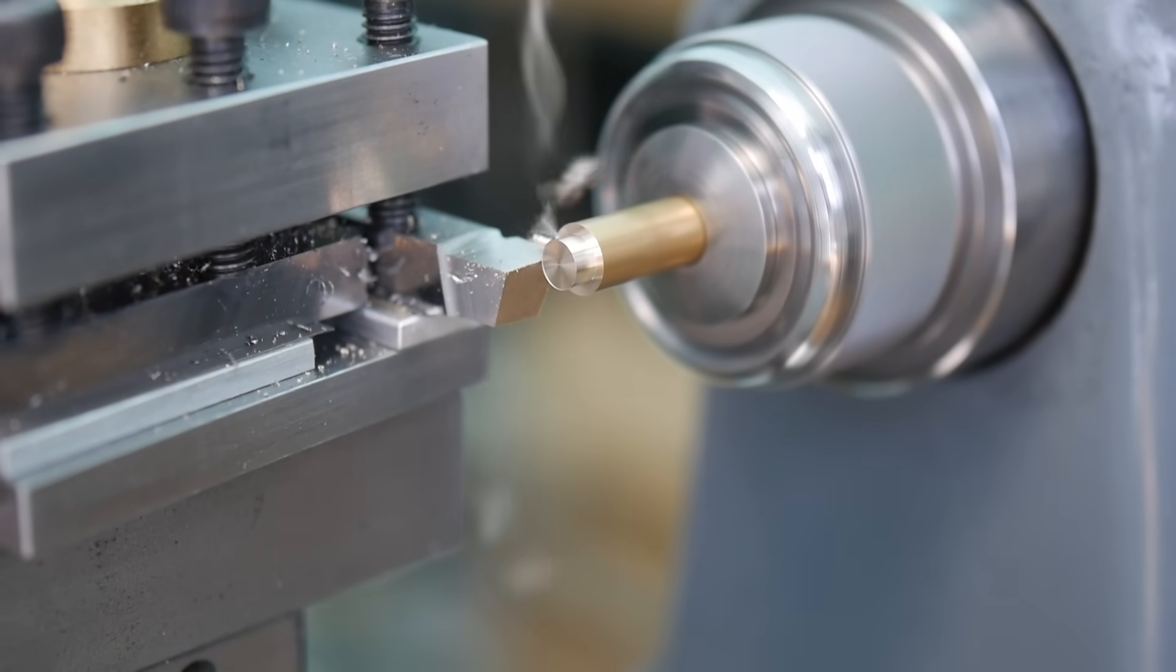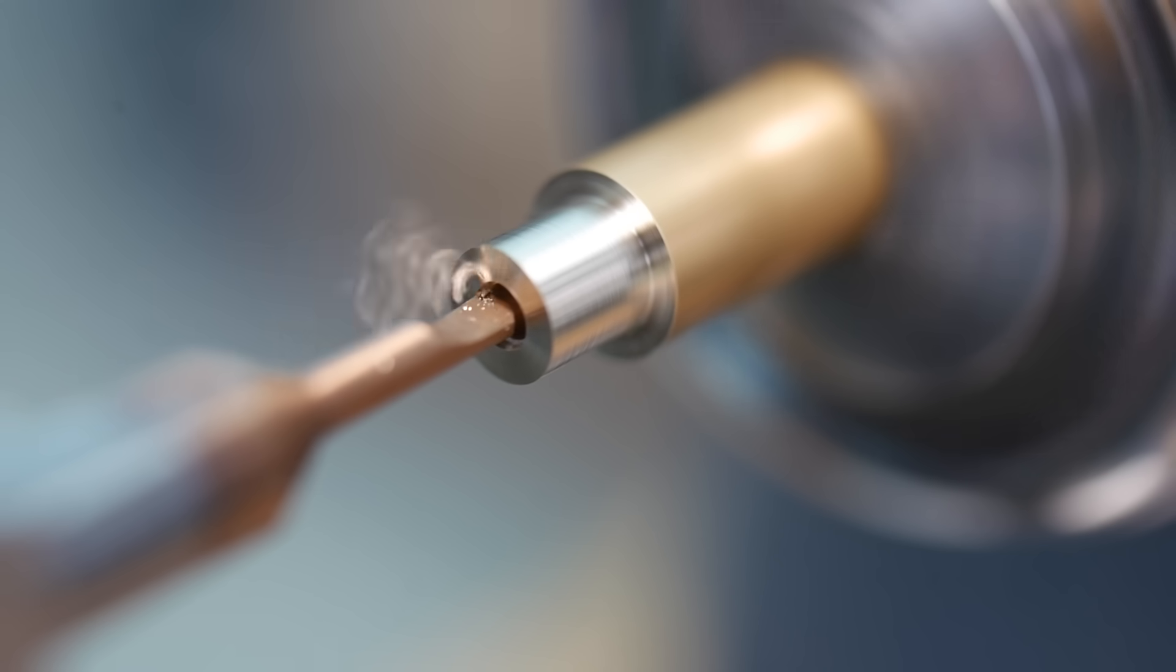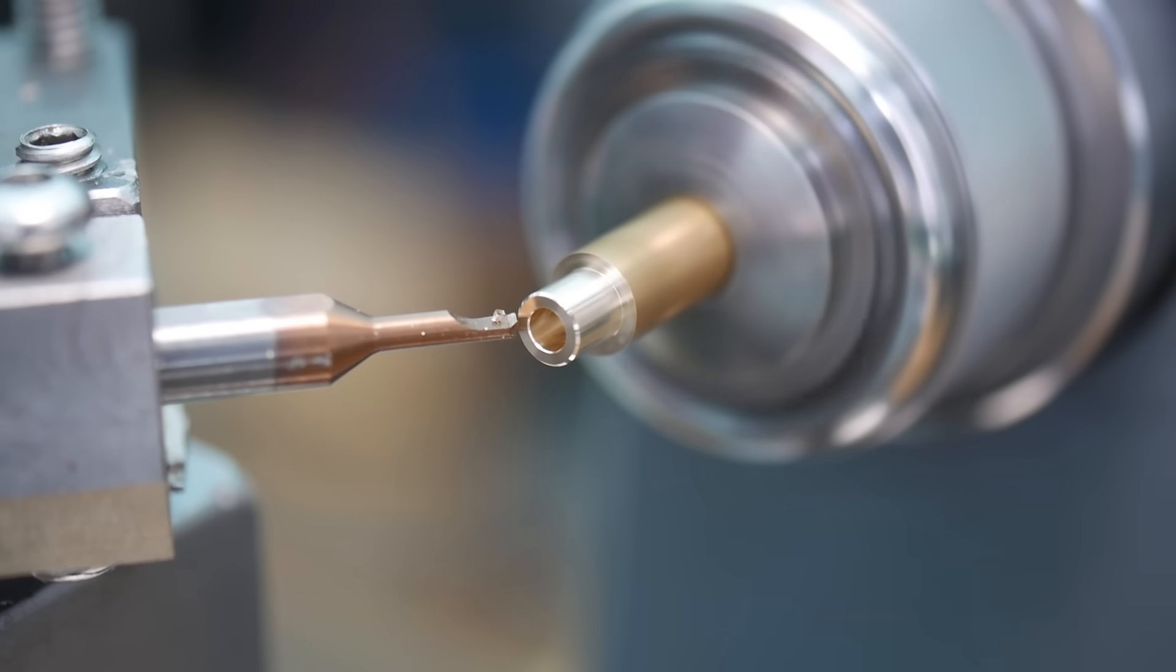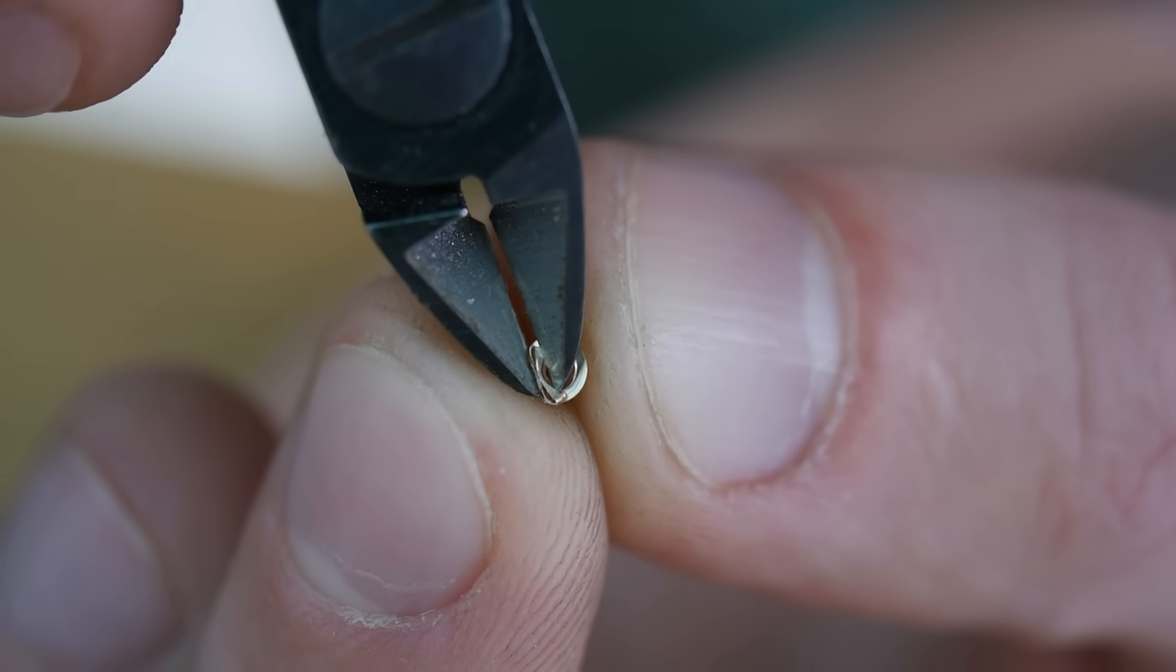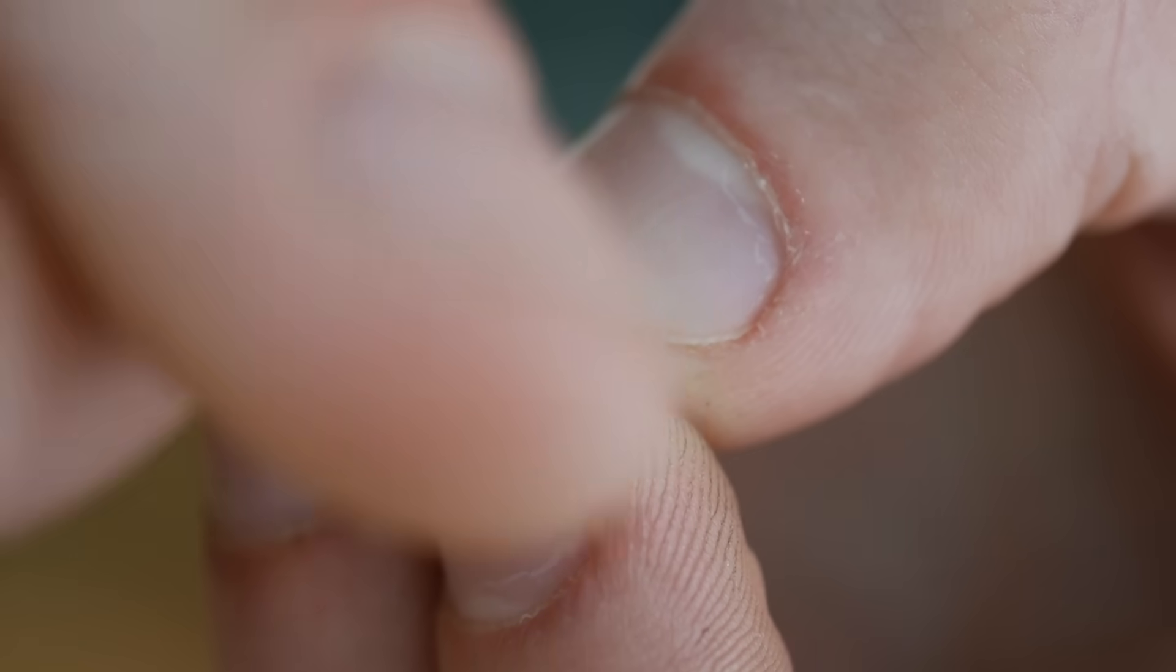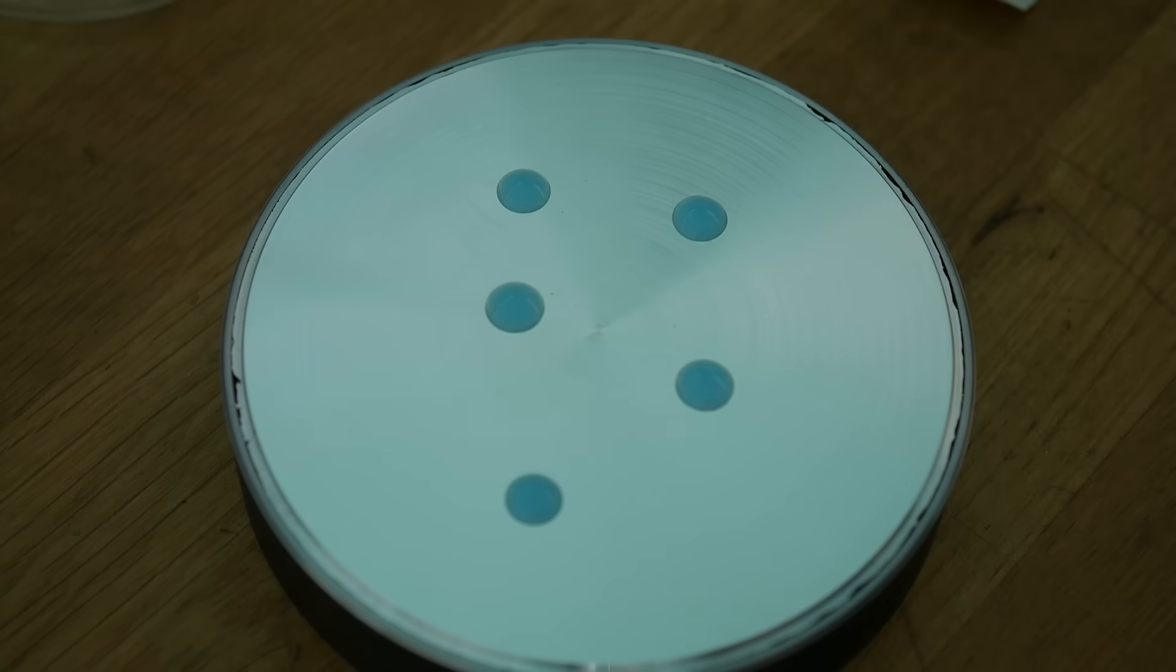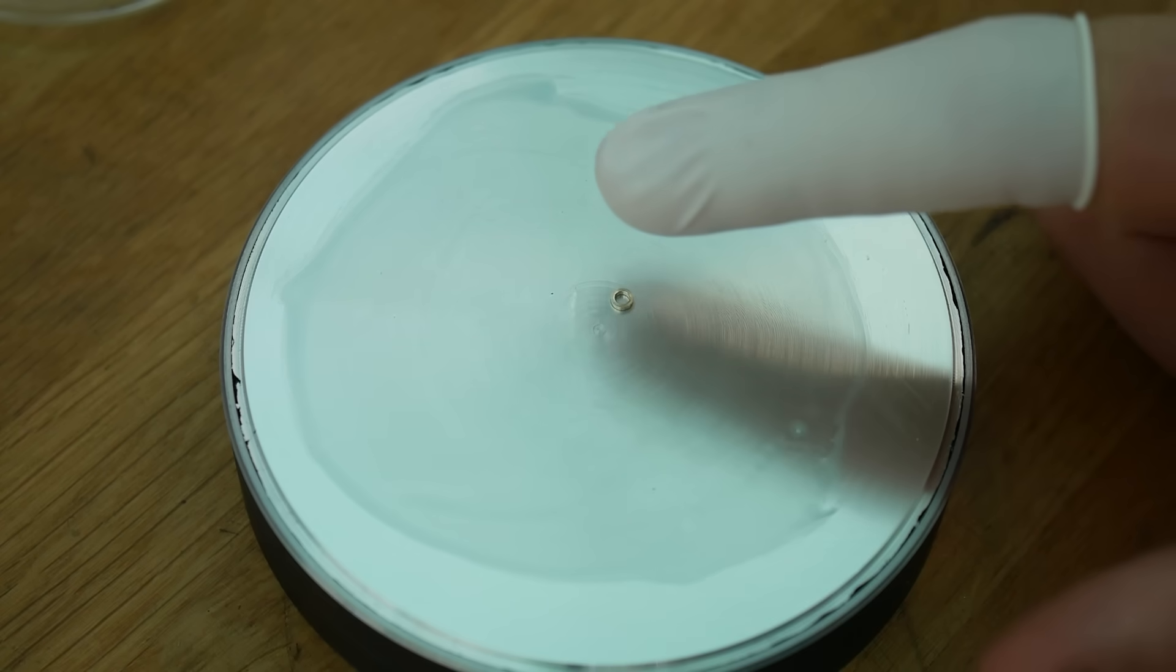Whilst jewels can be pressed straight into the component, they are also often pressed into a setting, which is a separate ring around the jewel. The main purpose of a jewel setting is for aesthetics, so for the large, obvious jewels, such as the one in this bridge, I intend to use a setting, but the smaller ones I will probably press direct into the component. I make the setting from brass to provide contrast against the steel of the bridge.